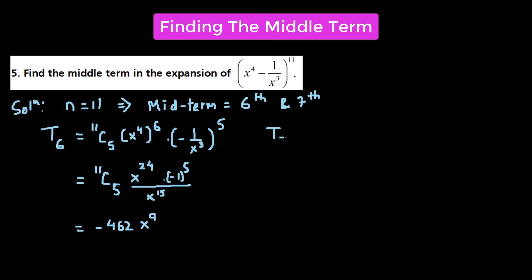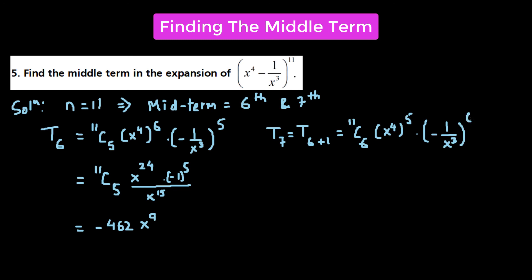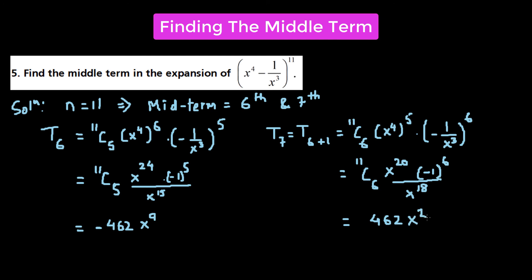For T7: 11C6 times (x⁴)^(11−6) = (x⁴)⁵, times (−1/x³)⁶. This equals 11C6 times x^(4×5) = x²⁰, times (−1)⁶, over x^(3×6) = x¹⁸. So 11C6 = 462, (−1)⁶ = positive 1, and x^(20−18) = x². So T7 = 462x². These are the ways of finding the middle terms for a binomial expression when the index n is an odd integer.